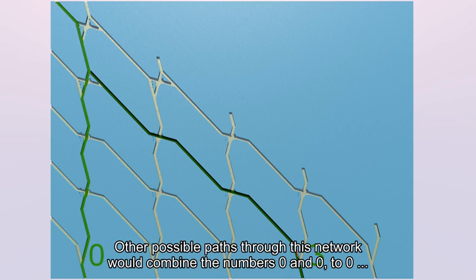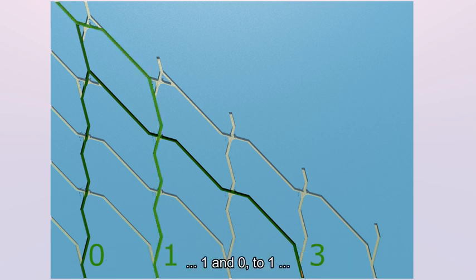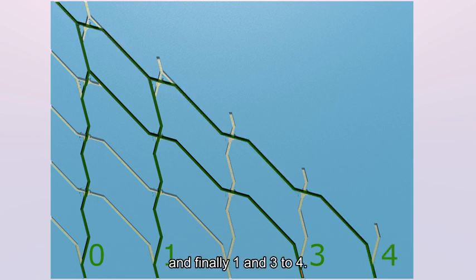Other possible paths through this network would combine the numbers 0 and 0 to 0, 1 and 0 to 1, and finally 1 and 3 to 4. No agents will come out of exit number 2.